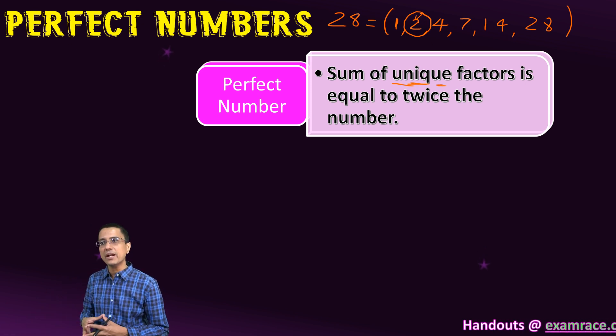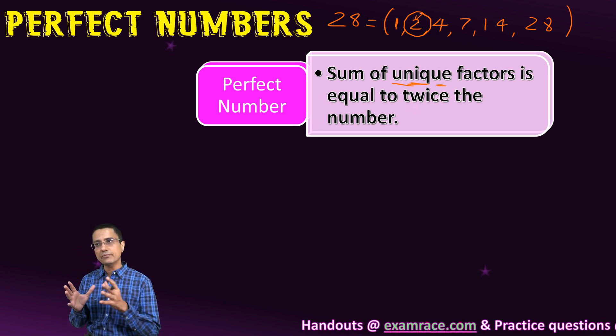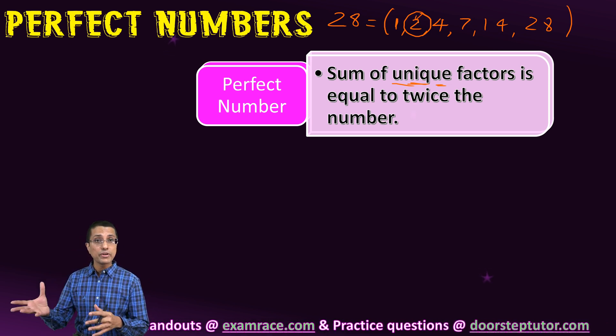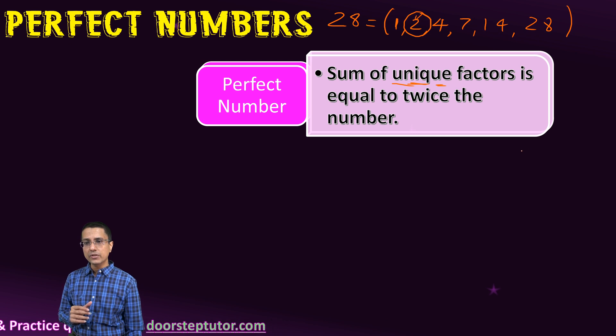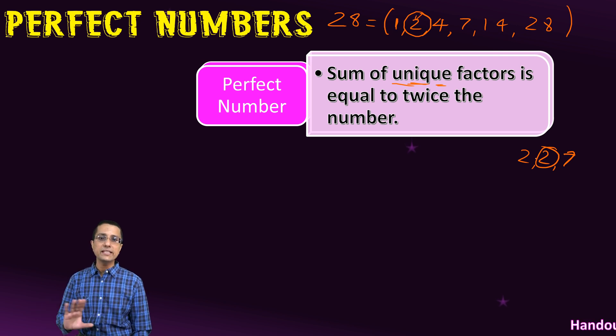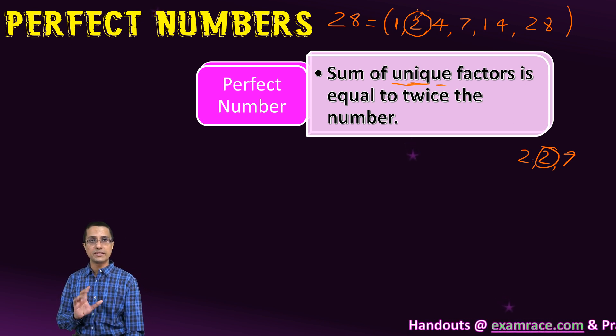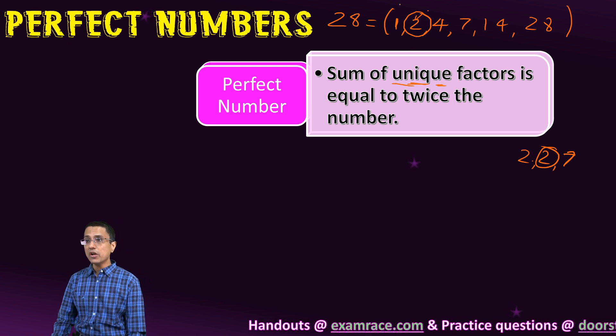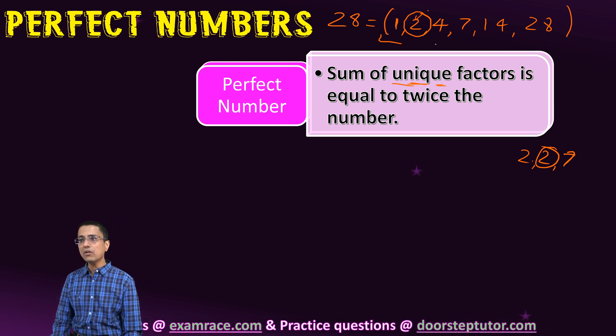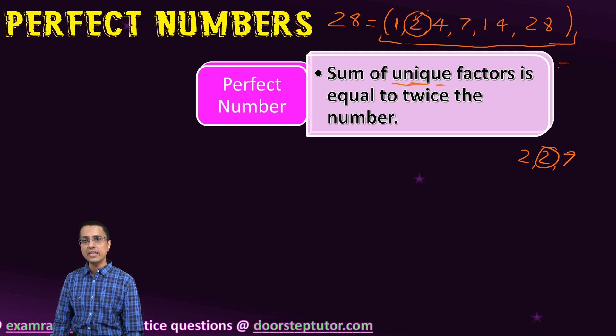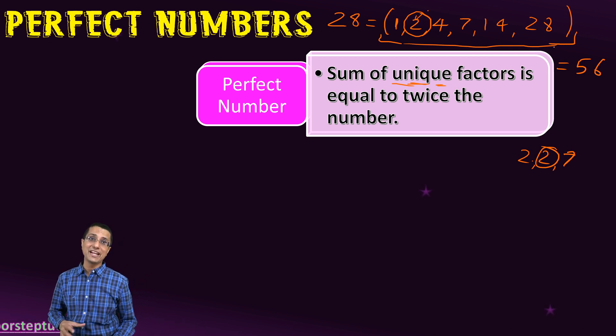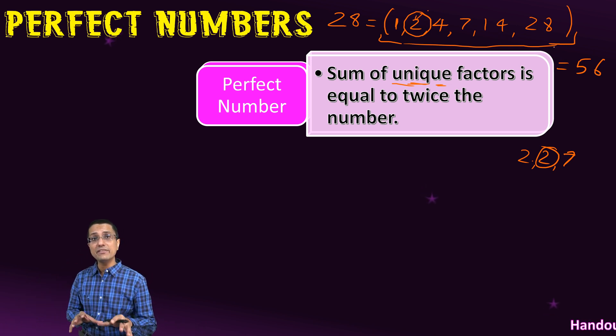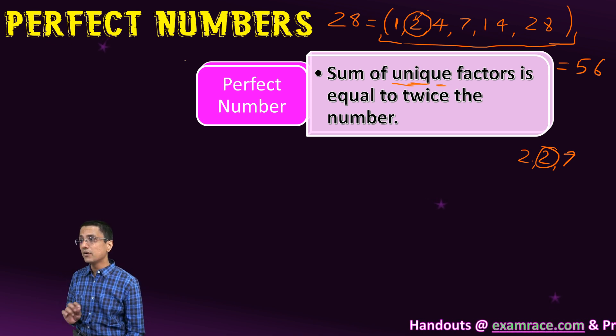If you're listing the prime factors of 28, the 2 would come twice - it's 2, 2, and 7. But in our list we've taken only one 2. We keep 2 only once; that's what unique means. Now if I sum all of these factors, it comes out to 56, and this 56 is 2 times 28. Numbers with this property are known as perfect numbers.